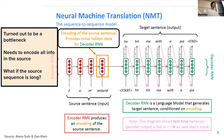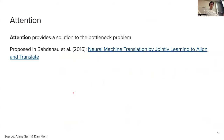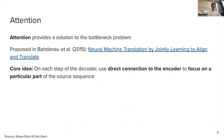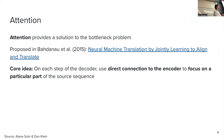The approach to fix that bottleneck is called attention, first proposed in a massively important paper. The core idea: at each step of the decoder when generating the next word, we use a connection to the encoder to tell the decoder which tokens in the source sequence to focus on at that particular time step. As we move to the next time step, different source tokens may become more important.